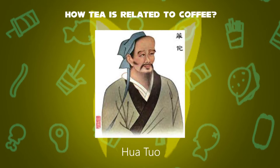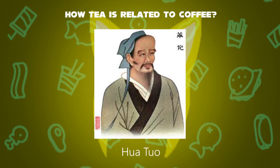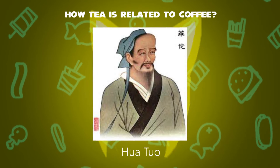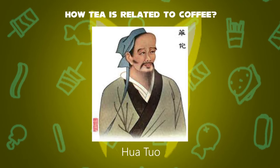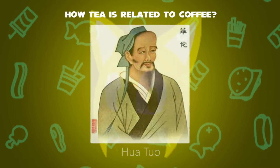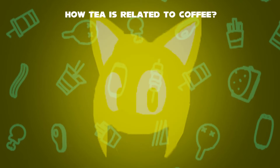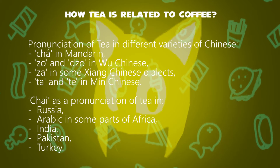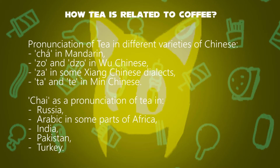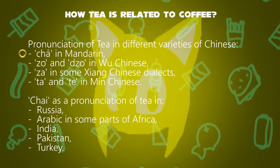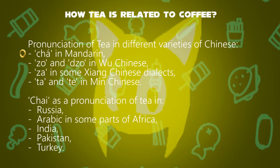An early credible record of tea drinking dates to the 3rd century AD in a medical text written by Hua Tuo. The term herbal tea refers to drinks not made from Camellia sinensis. The word for tea is pronounced differently across Chinese varieties, such as 'cha' in Mandarin.